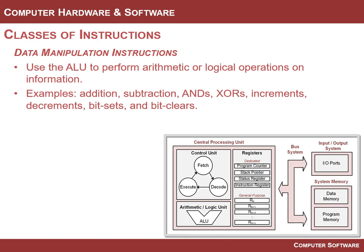The second class is called data manipulation instructions. These are instructions that use the ALU. You bring information into the CPU registers using a data movement instruction, and then you manipulate it — you add numbers together, subtract them, shift them, or perform a logic operation. That instruction is implemented with logic that sits in the ALU. The circuitry to do the actual operation has to already reside there, so when you design an instruction you also put the corresponding circuitry in the ALU. When you pull open a computer data sheet, it'll tell you what instructions are available for data manipulation.